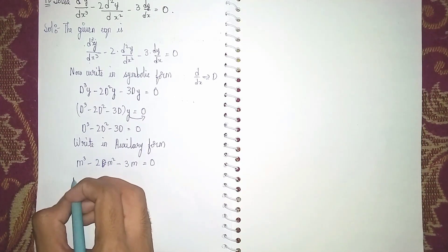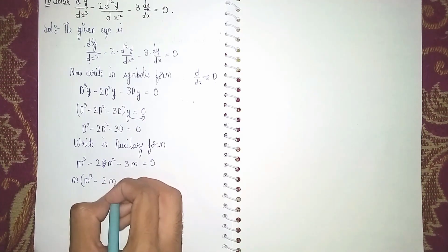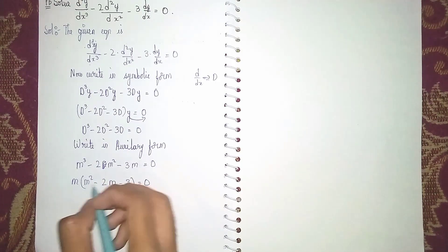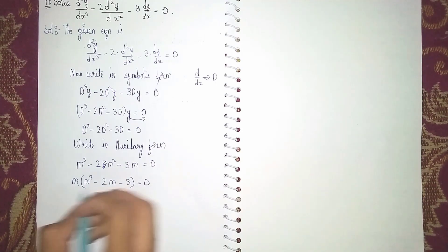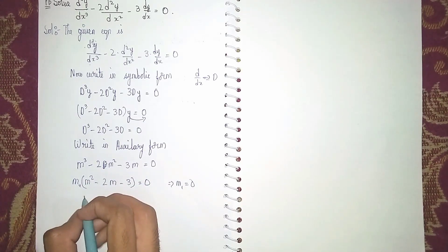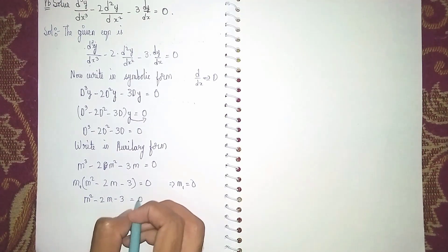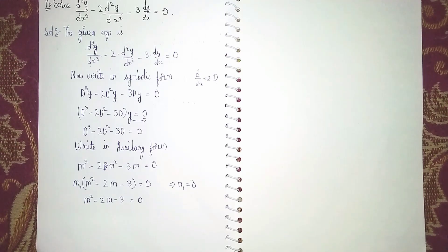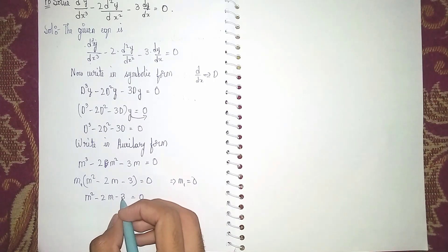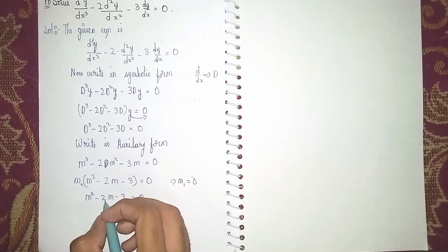We can take m as common here, so it becomes m times (m² minus 2m minus 3) equals zero. This gives us m₁ equals zero. Now the leftover equation is m² minus 2m minus 3 equals zero. We use the factorization method — middle term splitting — to find m₂ and m₃.